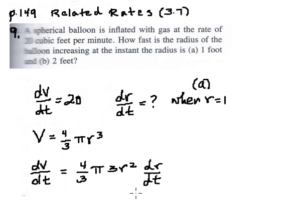In related rate problems, we always are assuming that the variables are changing with respect to time. Here let's simplify by dividing top and bottom by 3.